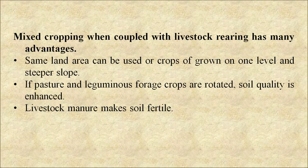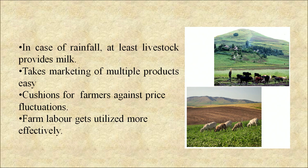Mixed cropping when coupled with livestock rearing has many advantages. The same land area can be used where crops are grown on one level and steeper slopes are used for pasture. If pasture and leguminous forage crops are rotated, soil quality is enhanced. Livestock manure makes soil fertile. In case of rainfall failure, at least livestock provide milk, making marketing of multiple products easy. This protects farmers against price fluctuation, and farm labor gets utilized more effectively.